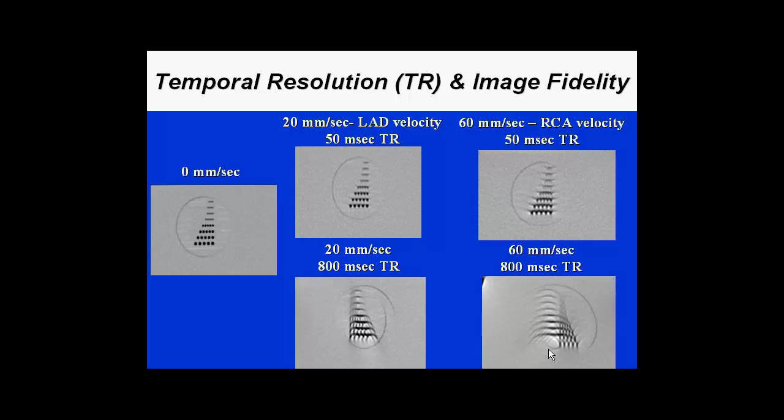On the far right is an example of moving the resolution phantom at 60 millimeters per second, which is roughly the peak velocity of the proximal and mid-right coronary artery during a standard cardiac CT examination. At a 50-millisecond temporal resolution, there is clearly some blurring, but we can still define reasonably down to the medium-sized resolution areas. However, at 800-millisecond temporal resolution, true aliasing of the images comes in. This is very similar to what we see in echocardiography when switching from blue to red in Doppler velocity panels, or like an old movie where a wagon wheel moves so fast it appears to be moving backwards.